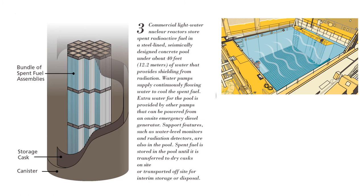Here, a bundle of spent fuel assemblies arranged inside a storage cask is shown. Commercial light water nuclear reactors store spent radioactive fuel in a steel-lined, seismically designed concrete pool under about 40 feet (12.2 meters) of water that provides shielding from radiation. Water pumps supply continuously flowing water to cool the spent fuel. Extra water is provided by pumps that can be powered from an on-site emergency diesel generator. Spent fuel is stored in the pool until it is transferred to dry cask on-site or transported off-site for interim storage or disposal.